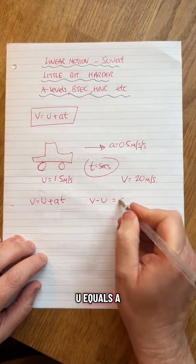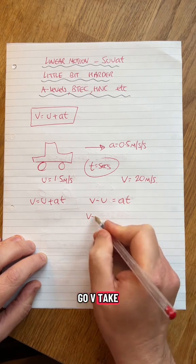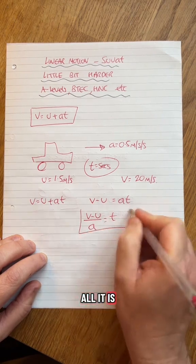V take away U equals A times T. Bring the U across. I'm going to leave T by itself, so I'm going to go V take away U, divide it by A. Easy peasy, that's all it is.